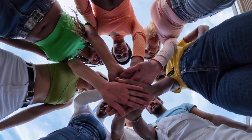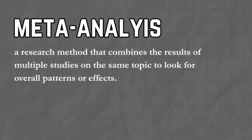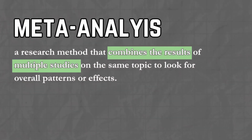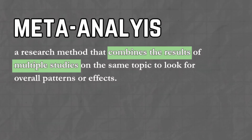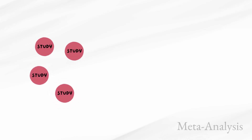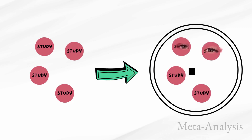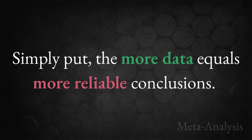Finally, we have the world's greatest collaboration tool: a meta-analysis. Instead of running one brand new study, a meta-analysis takes a bunch of existing studies on the same topic and combines their results. Let's say there are 30 studies on how sleep affects school performance — instead of reading them all and guessing, a meta-analysis analyzes the combined data to spot patterns and draw bigger conclusions. Simply put, more data equals more reliable conclusions.